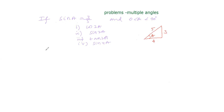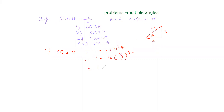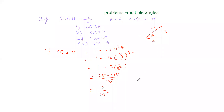First, we calculate cos 2A. Since sin A = 3/5, the formula for cos 2A is 1 minus 2 sin² A. Substituting: 1 minus 2 times (3/5)² equals 1 minus 2 times 9/25, which is 1 minus 18/25. Taking LCM of 25 gives us 25 minus 18 divided by 25, so cos 2A equals 7/25.